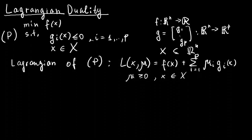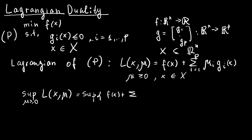It turns out the Lagrangian function can be used to conveniently represent the original problem P. We look at the supremum of L(x, μ) for μ ≥ 0, i.e., the largest possible value of the Lagrangian over non-negative multipliers. This equals the supremum of f(x) plus the summation for i between 1 and p of μ_i g_i(x) for μ ≥ 0.